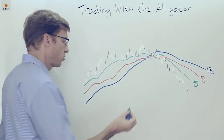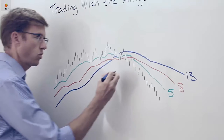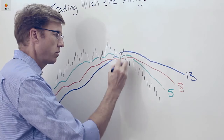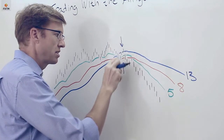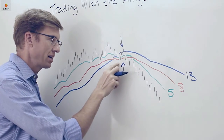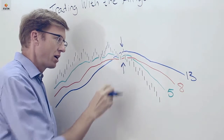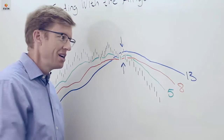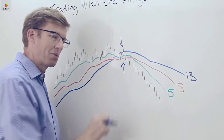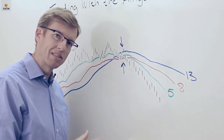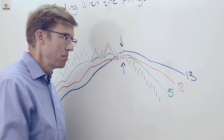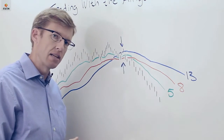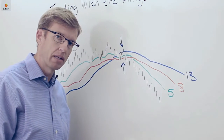Periodically these lines will become intertwined and confused. We would look at that as a non-trending market — you can see an example of that right here where the alligator is sleeping or getting hungry. We're interested in these periods of time because they precede a potential breakout, but it does indicate that there is a non-trending market in place.